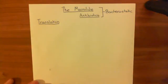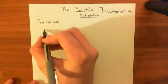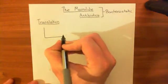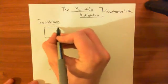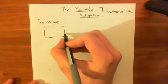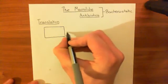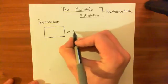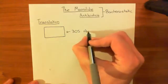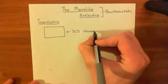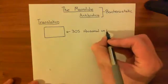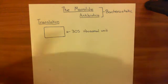So the start of translation: you begin with what is known as a 30S ribosomal subunit. This box that I'm drawing here represents our 30S ribosomal subunit, and this is going to make up half of the full ribosome. We haven't assembled the ribosome yet, so we have to assemble it still.